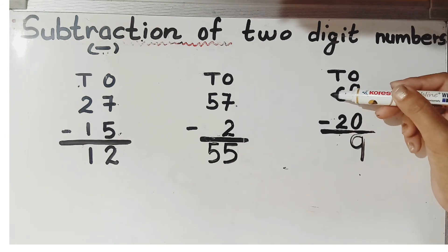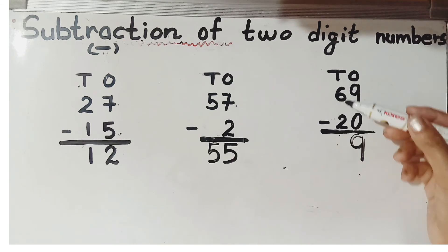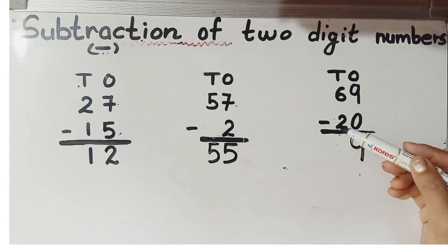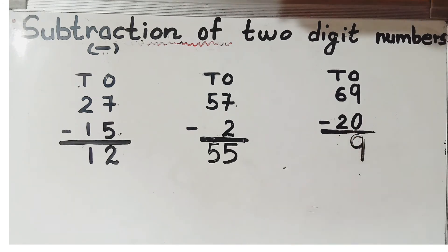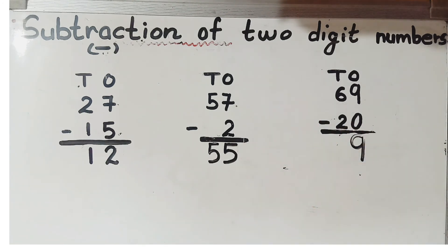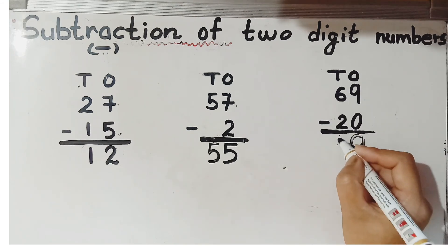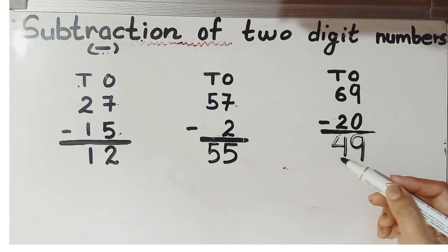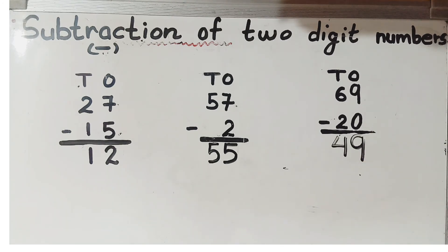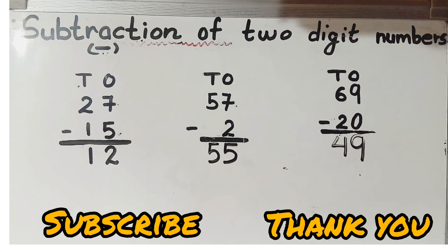Now subtract the tens: six minus two. Six is bigger and two is smaller, so keep six in your mind and open two fingers. Count backward: before six is five, before five is four. Six minus two equals four. So the answer is 49 — 69 minus 20 equals 49. That's how you do subtraction of two-digit numbers by backward count. Thank you.